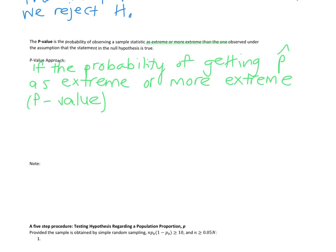If the p-value is small, that means it's a low probability, so it's an unusual event, and we're going to reject the null. Those are our two methods. Let's make a quick note before we start doing our calculations.